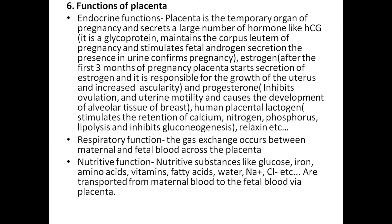Functions of the placenta. First is endocrine function: the placenta is a temporary organ of pregnancy and secretes a large amount of hormones like HCG, estrogen, progesterone, and human placental lactogen. After the first three months of pregnancy, the placenta starts secretion of hormones responsible for growth of the uterus, increased vascularity, and maintenance of pregnancy.